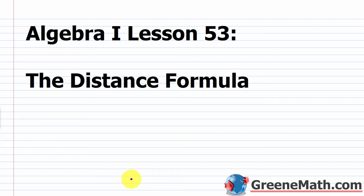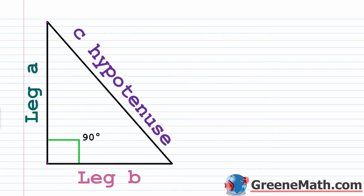Hello and welcome to Algebra 1 Lesson 53. In this lesson we're going to learn about the distance formula. We just got done talking about square roots, cube roots, fourth roots — basically radicals in general.